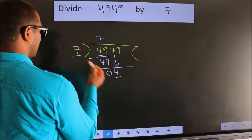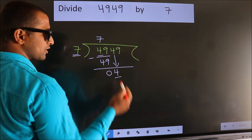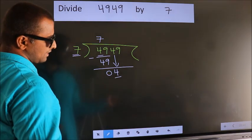Here we have 4. Here 7. 4 is smaller than 7, so we should bring down the second number.